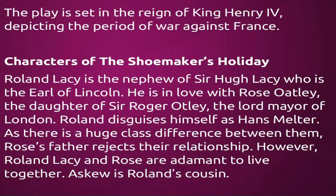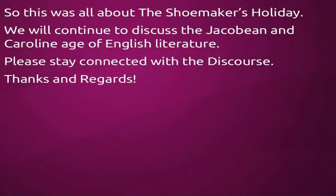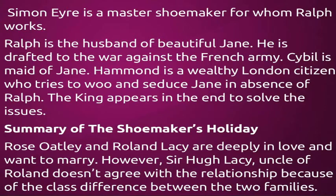Eskew is Roland's cousin. Simon Eyre is a master shoemaker for whom Ralph works. Ralph is the husband of beautiful Jane. He is drafted to the war against the French army. Sybil is maid of Jane. Hammond is a wealthy London citizen who tries to woo and seduce Jane in the absence of Ralph. The King appears in the end to resolve the issues.